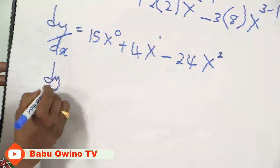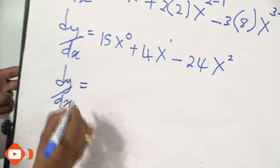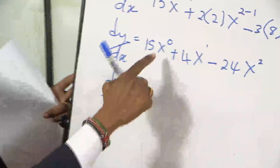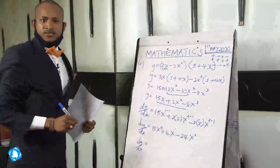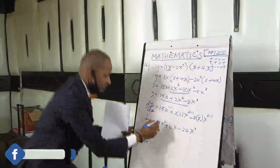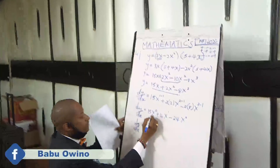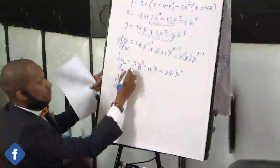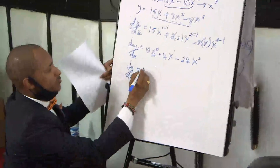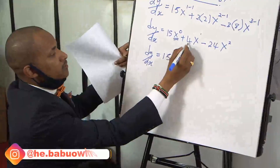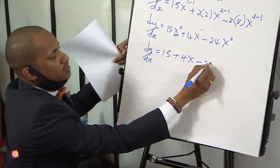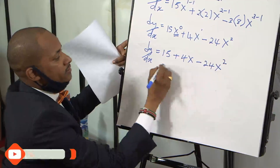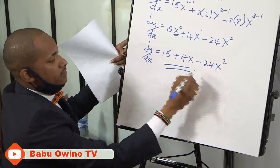From here: any number or any letter raised to the power 0 equals 1. Therefore x raised to the power 0 equals 1. So this is 15 times 1 is 15, plus 4x, minus 24x squared. So this is our answer.